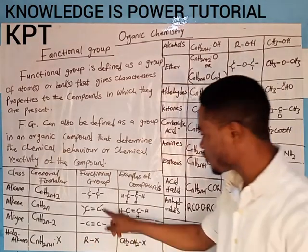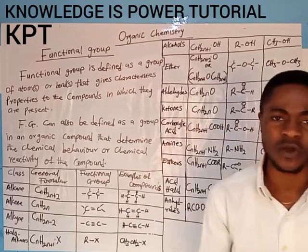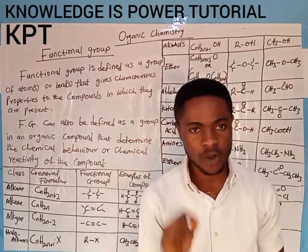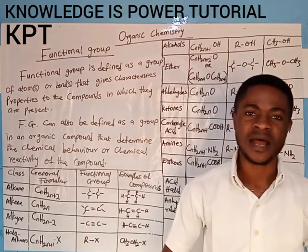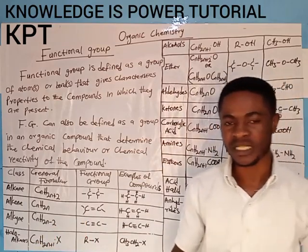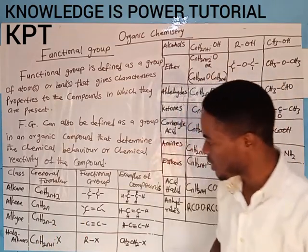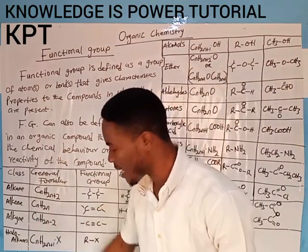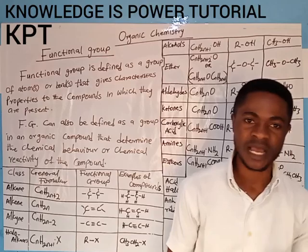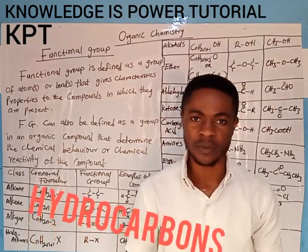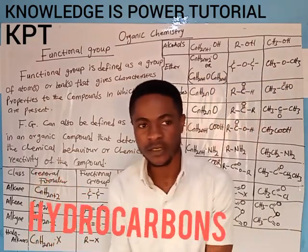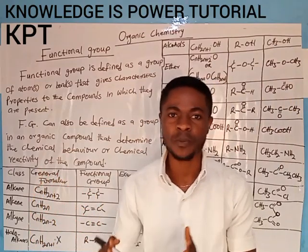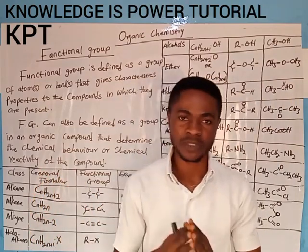In this video I want you to focus your attention on these functional groups. So as for the alkanes, their functional groups are these. So whenever you see an organic compound made up of a single bond, that compound is most likely to be an alkane. Now very importantly, the alkane, alkene, and alkyne — these three organic compounds are regarded as hydrocarbons, so they are collectively called hydrocarbons.